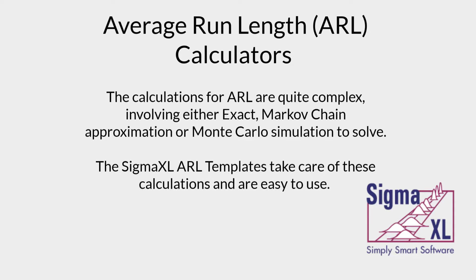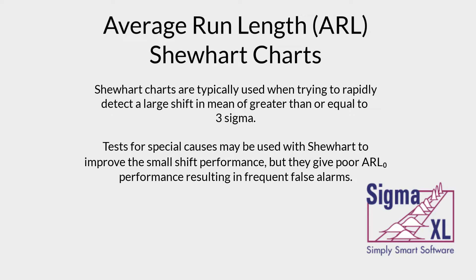The calculations for ARL are quite complex, involving either exact Markov chain approximation or Monte Carlo simulation to solve. The SigmaXL ARL templates take care of these calculations and are easy to use. Shewhart charts are typically used when trying to rapidly detect a large shift in mean of greater than or equal to 3 Sigma. Tests for special causes may be used with Shewhart to improve the small shift performance, but they give a poor ARL zero performance resulting in frequent false alarms.